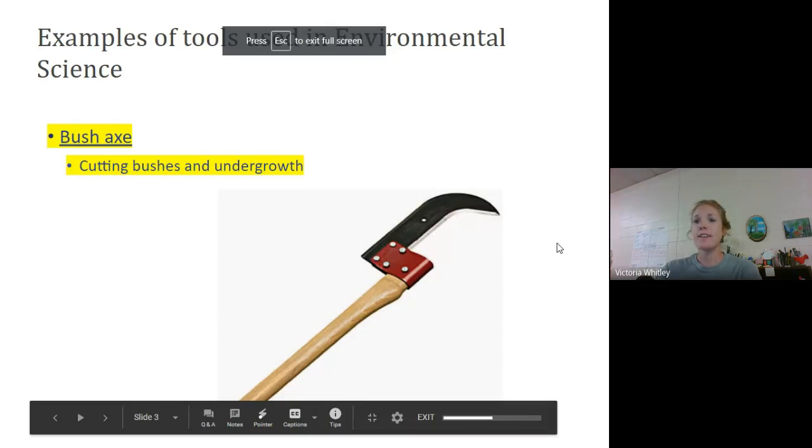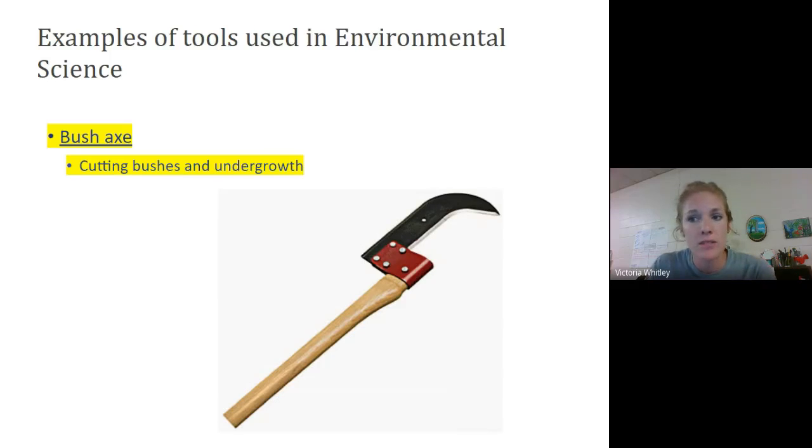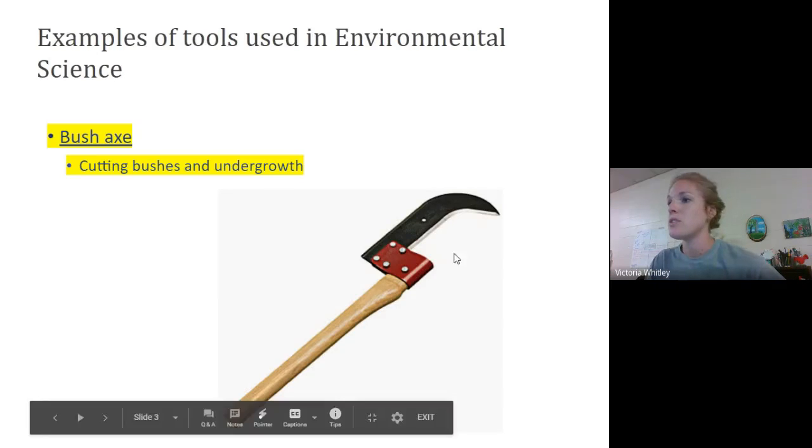First one is going to be a bush axe. So if you've ever used this tool, you probably used it to clear out stuff. A lot of people use this tool as well as foresters to clear out areas that are overgrown. Like if you are in the woods and you're trying to clear a path or clean out some undergrowth. Undergrowth being all the stuff that grows on the bottom of the forest floor. You can use this to chop. It's used in a chopping motion to cut bushes and undergrowth. Used to axe bushes, I guess.